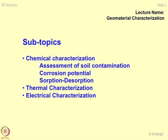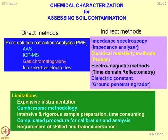We will continue our discussion on corrosion potential of the soil, followed by sorption-desorption, thermal characterization, and electrical characterization of the geomaterials. Let me start with chemical characterization for assessing soil contamination — or you may also call it determination of extent of contamination of soil mass because of chemicals.